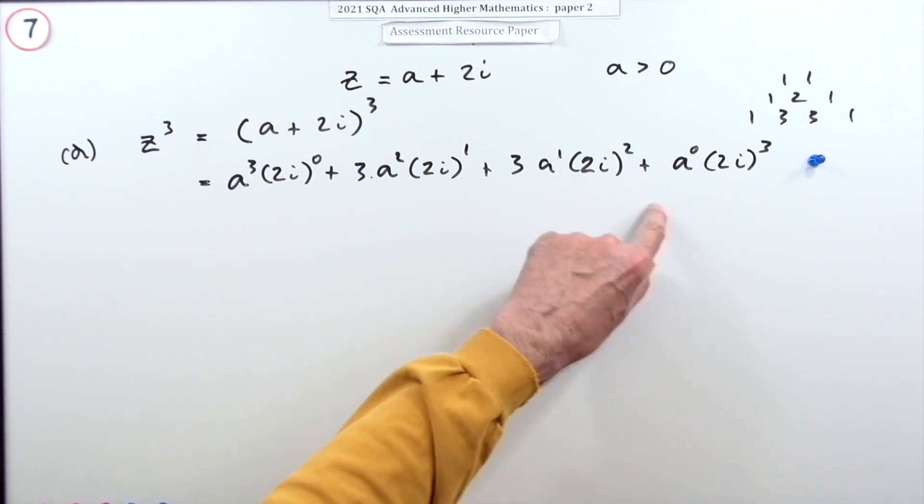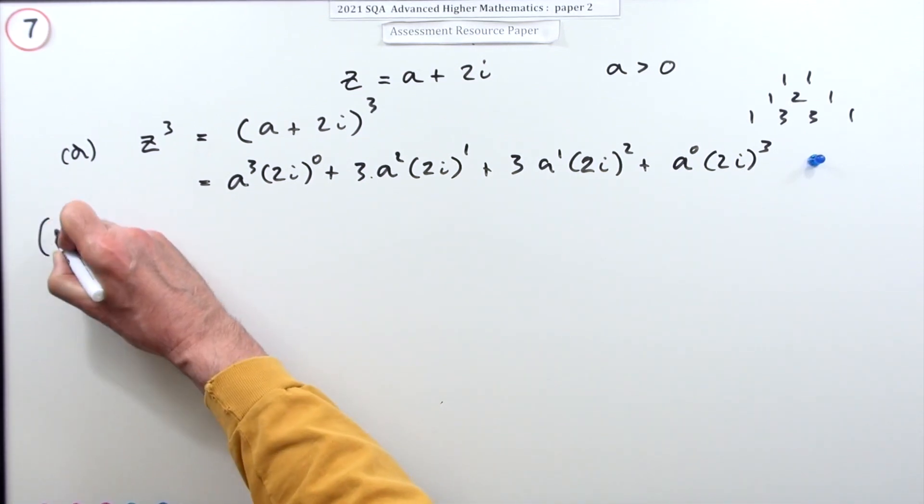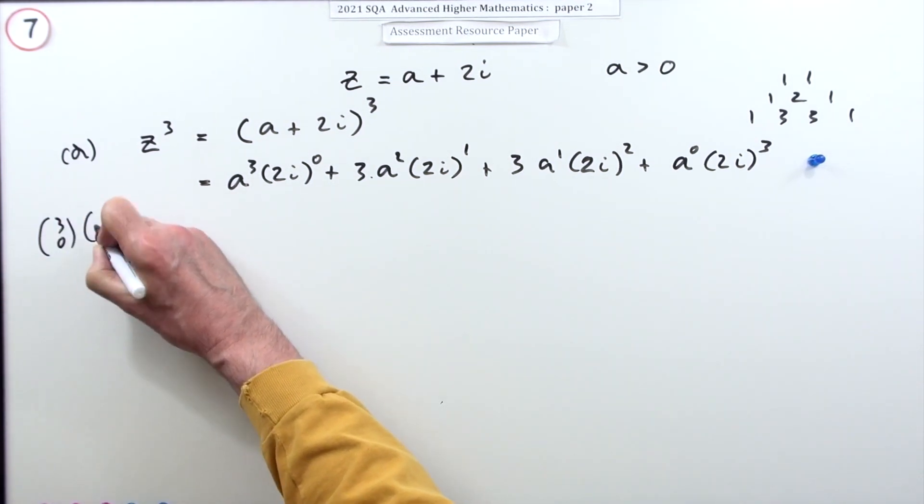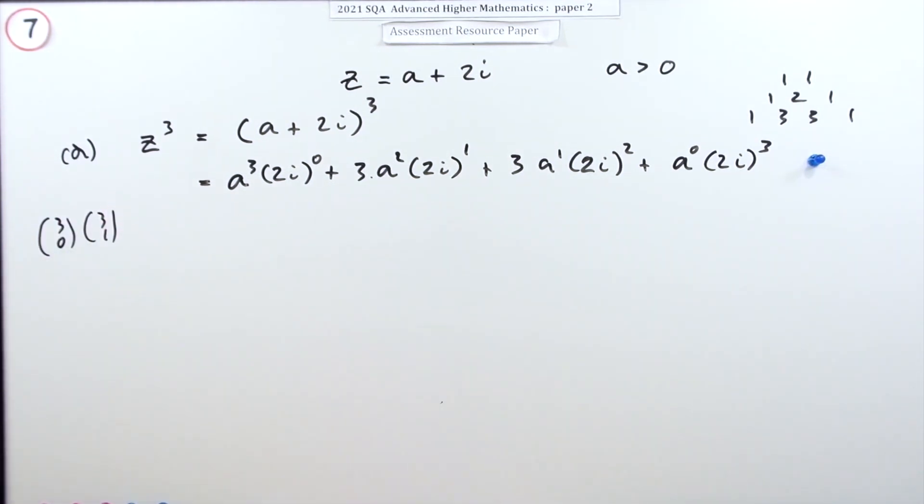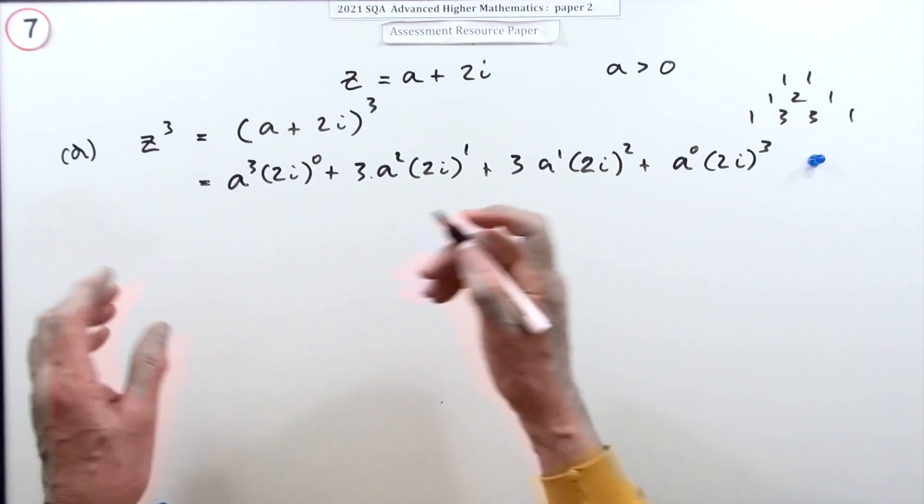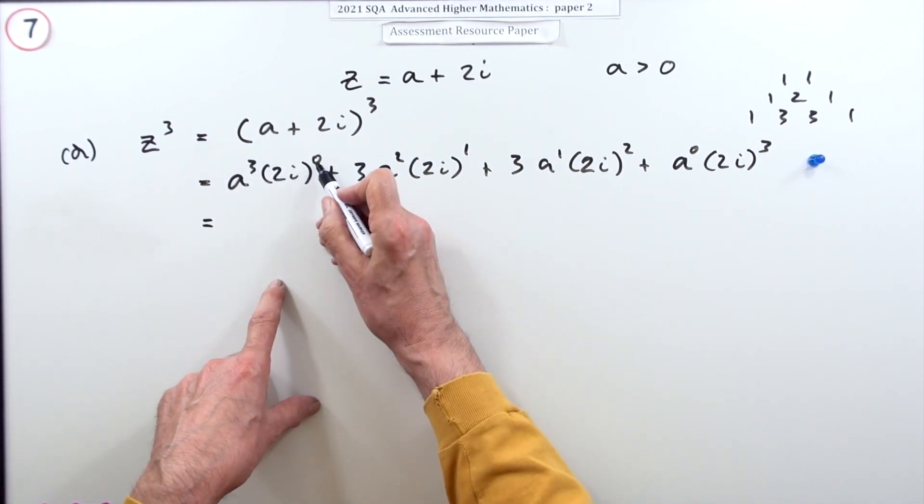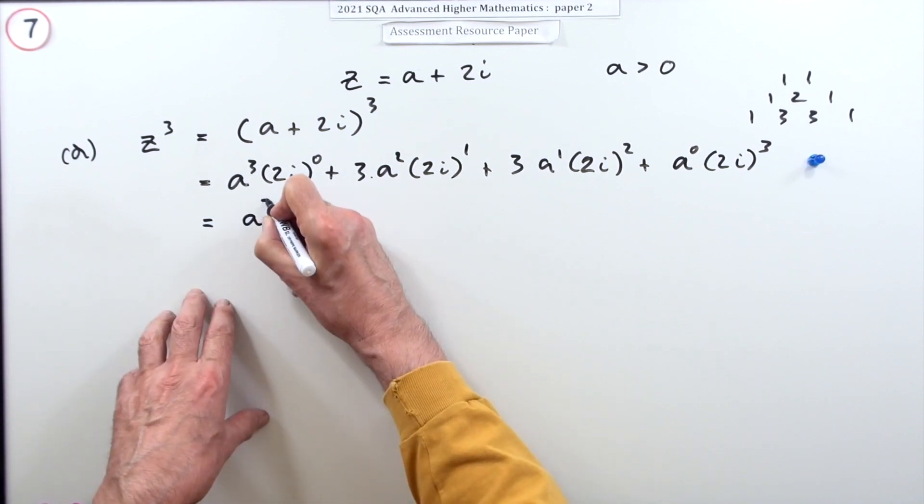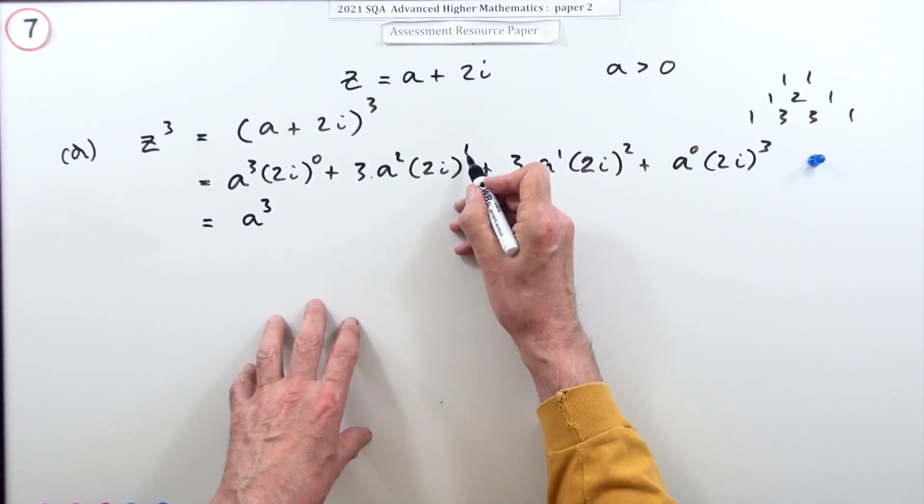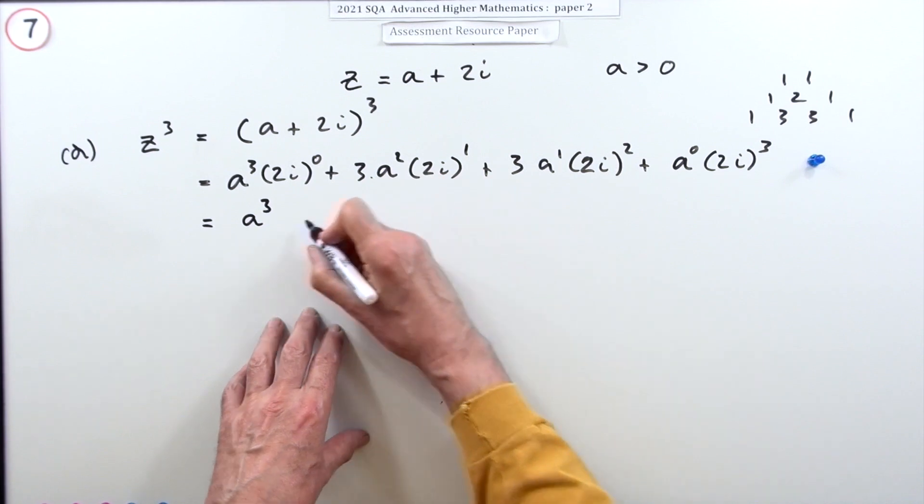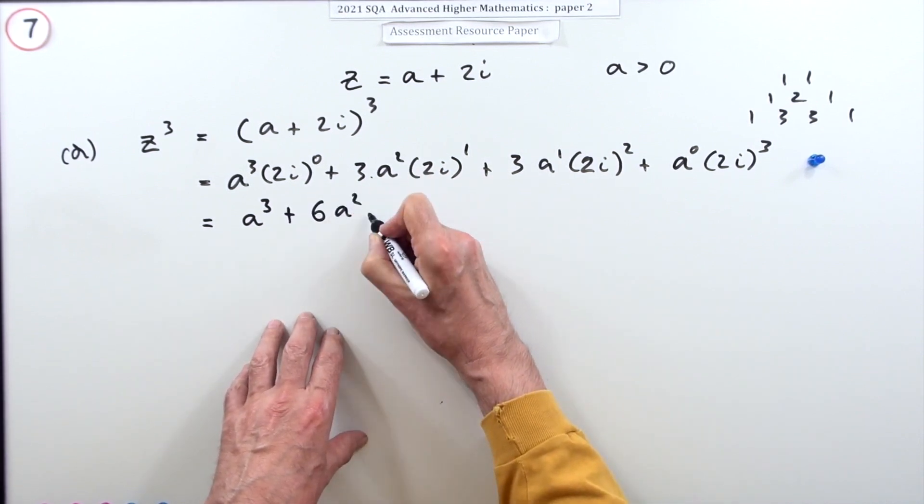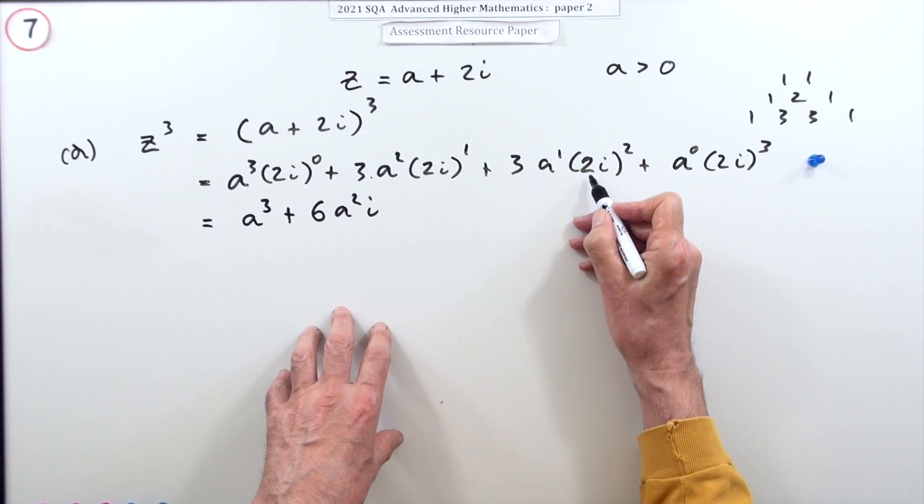But now it says simplify it. Well, power zero is just one, so that's just a cubed. i cubed just stays the same, so it'll be 6a squared i. This one: i squared is negative one, two squared is four, so that's negative 12a.